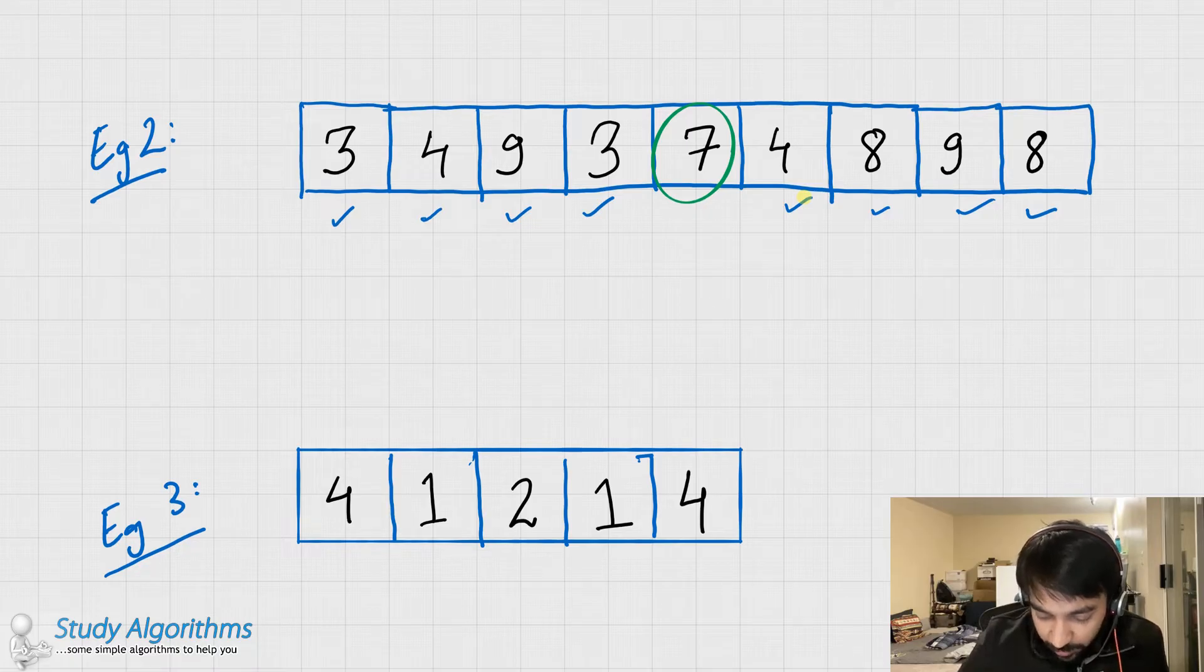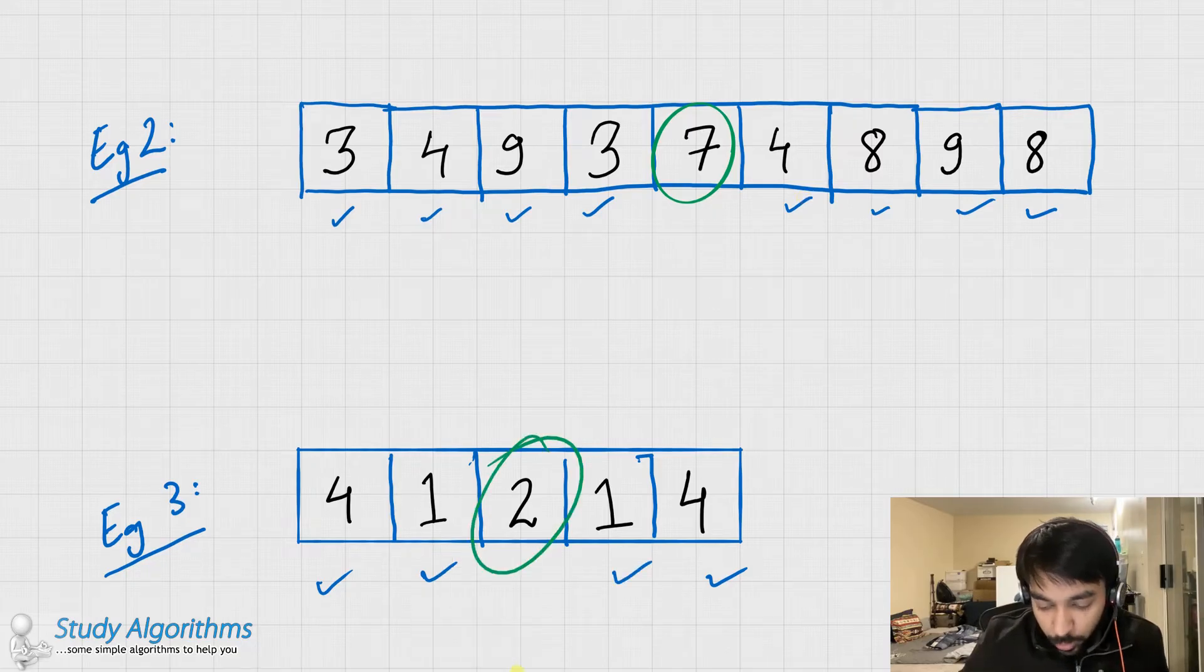In the last case that we have to see, 4 is occurring twice, 1 is occurring twice, and in this case our answer would be 2. So let's see, how are we going to solve this problem?